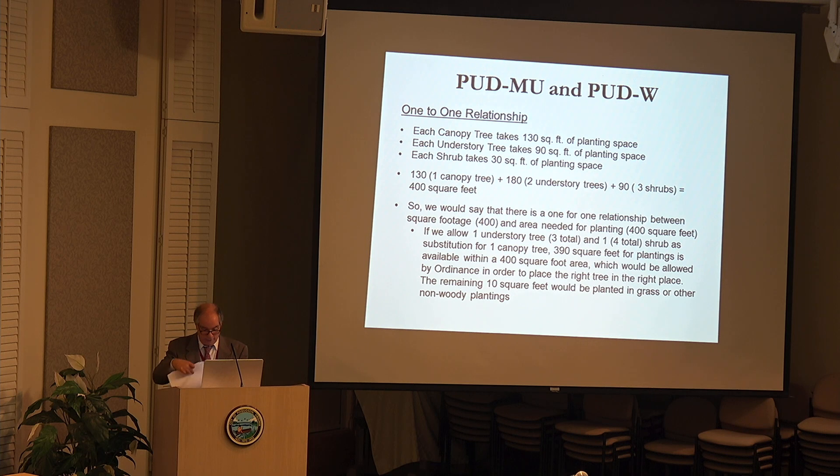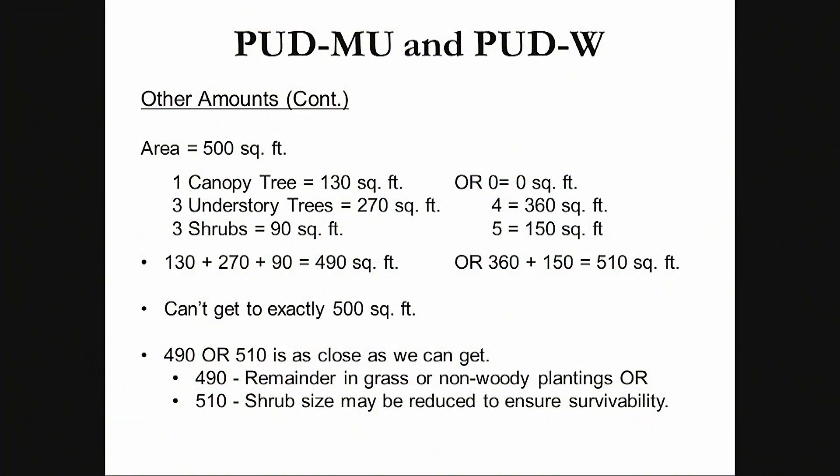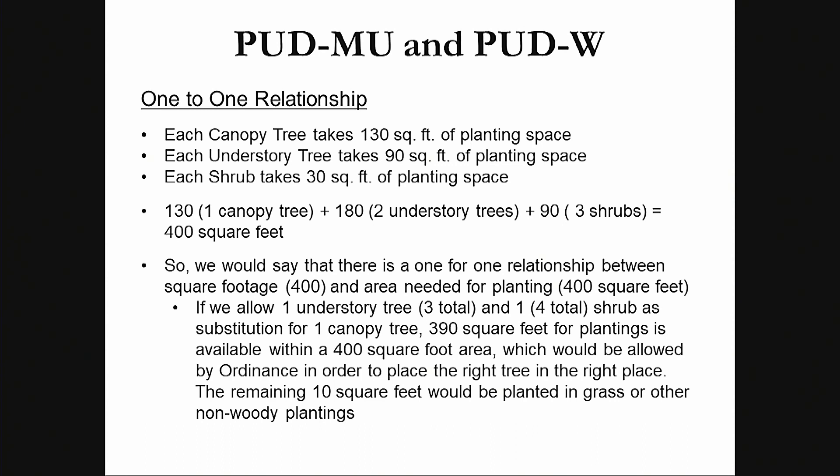Let me go over these slides. We've already covered the one-to-one relationship. You can get 400 square feet if you take one canopy tree, two understory trees, and three shrubs. If you do three understory trees and four shrubs, you only get 390 square feet. So what happens to the remaining 10 square feet? We would probably just require them to plant in grass or other non-woody plantings, which might be flowers.